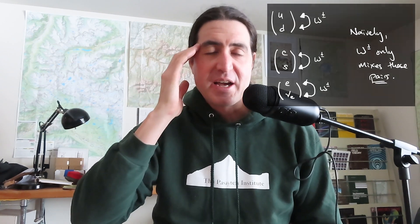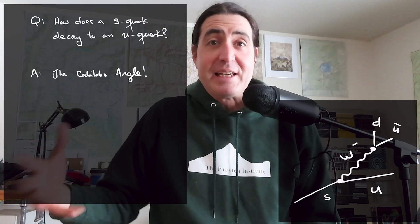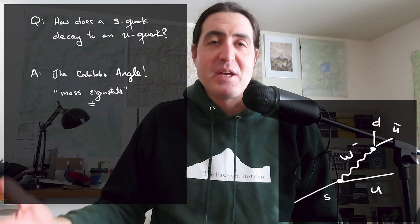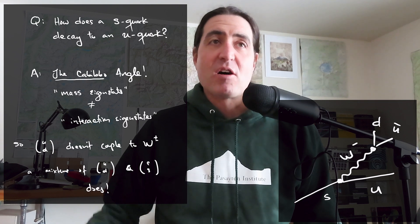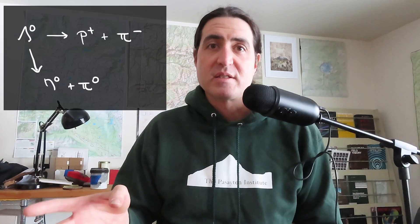I realized that both pathways involve the decay of a strange quark, and I ran into two questions. First, how does a strange quark decay into an up quark? You know the electroweak doublets for the quarks: up and down, and charm with strange. What's the path for going from one to the other? That's when I had to relearn all my particle physics. The answer is a strange quark can decay into an up quark because of the Cabibbo angle — the CKM mass mixing matrix. The mass eigenstates of the quarks are not the same as their interaction eigenstates.